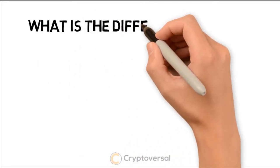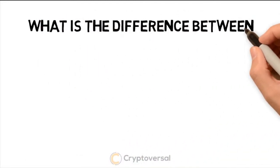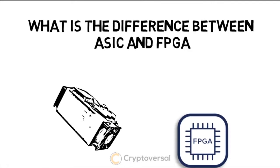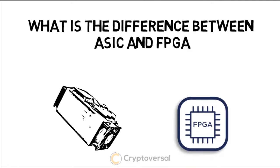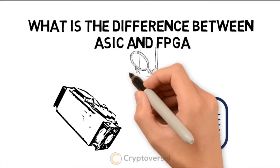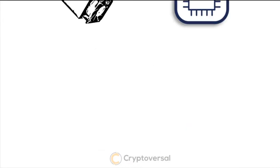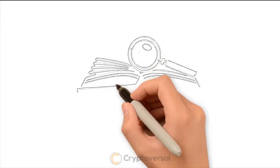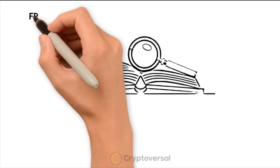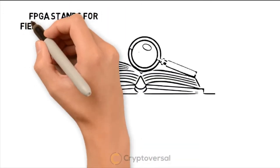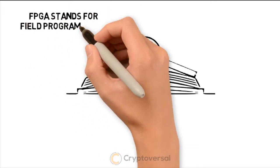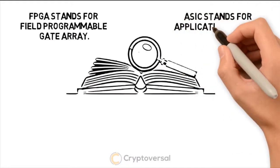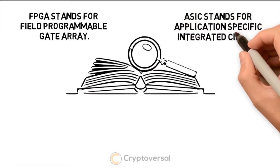What is the difference between ASIC and FPGA? FPGA stands for Field Programmable Gate Array, while ASIC stands for Application Specific Integrated Circuit.